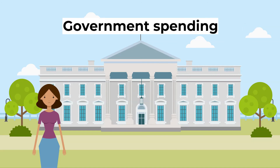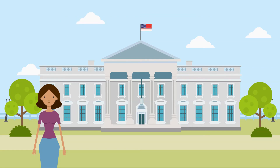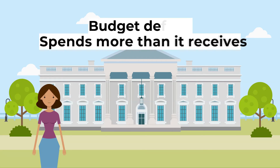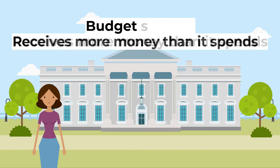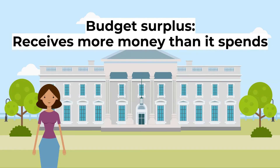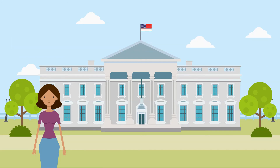A rise in government spending will increase aggregate demand since it is one of its components. The government's fiscal, spending, borrowing, and taxation plans are outlined in the budget. A budget deficit is when the government spends more money than it receives, and a budget surplus is when the government receives more money than it spends.